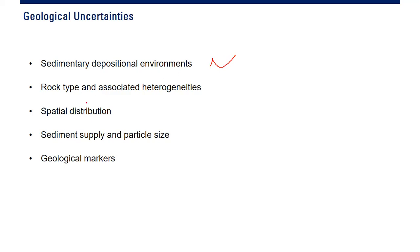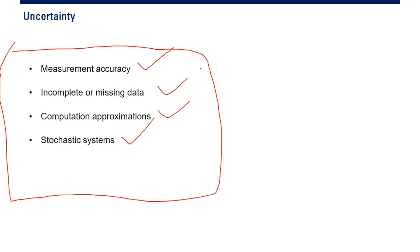Rock type and associated heterogeneities, spatial distribution, sediment supply and particle size, geological markers — everything here we cannot be 100% certain about. We will have doubt; we will have uncertainty regarding these things.